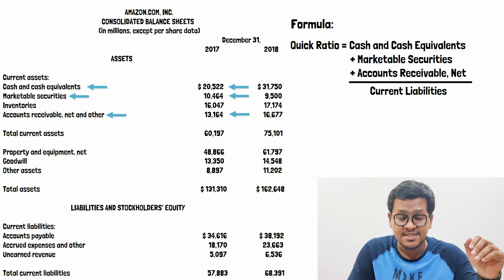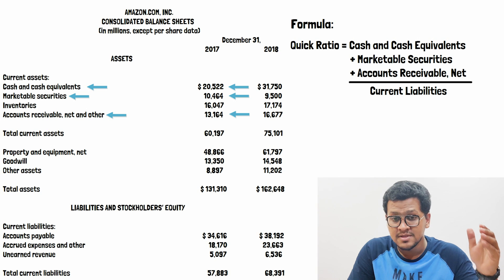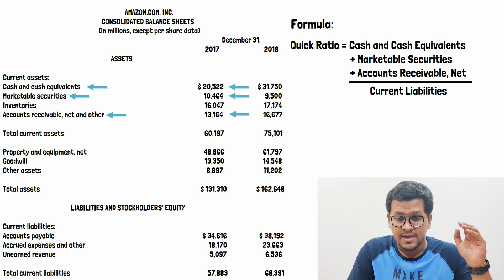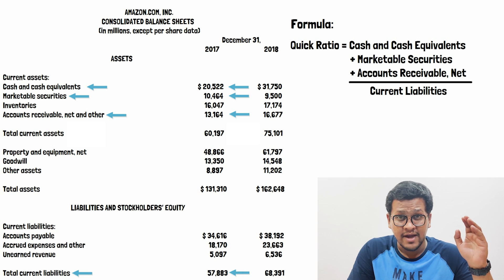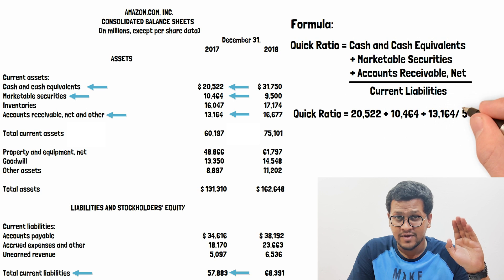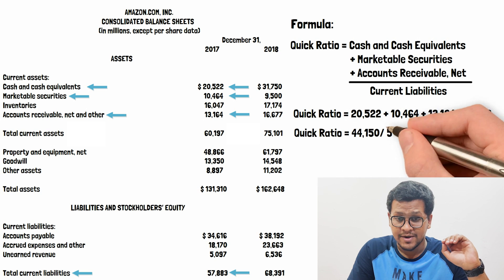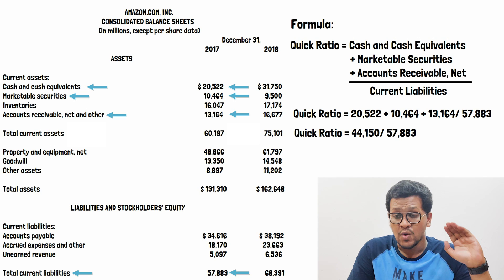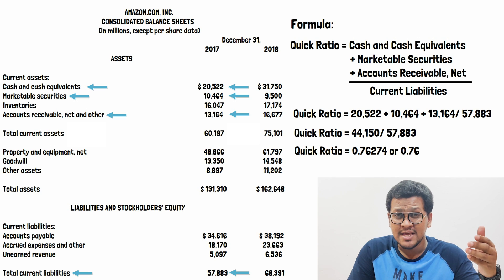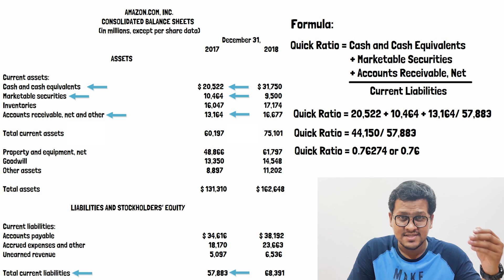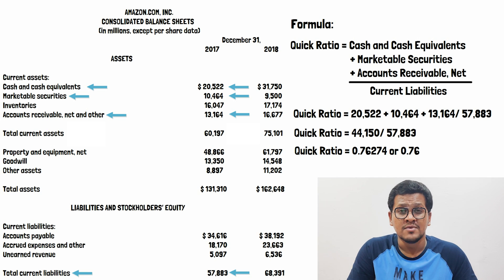Moving to the current liabilities section, we have accounts payable, accrued expenses, and unearned revenue. Adding these three items gives total current liabilities of 57,883 million. Dividing our quick assets of 44,150 million by total current liabilities of 57,883 million, we get a quick ratio of 0.76274, which rounds to 0.76. So the quick ratio of Amazon.com for 2017 is 0.76.